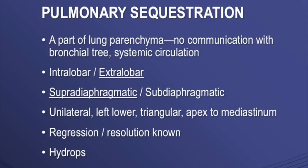The other pathology is pulmonary sequestration — a part of lung parenchyma that has no communication with the bronchial tree and has a systemic circulation. It can be intralobar or extralobar, with extralobar more commonly diagnosed antenatally. It can be supradiaphragmatic or subdiaphragmatic, and the left lower lobe is usually the commonest location. It appears as a triangular lesion with the apex towards the mediastinum. Regression or resolution is known, hydrops may or may not develop — so a similar presentation to CPAM but a different etiology.